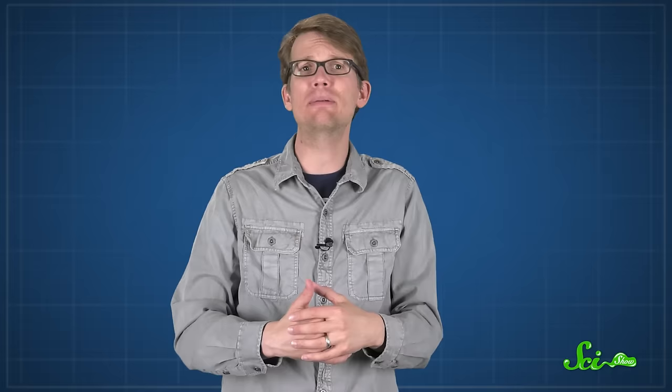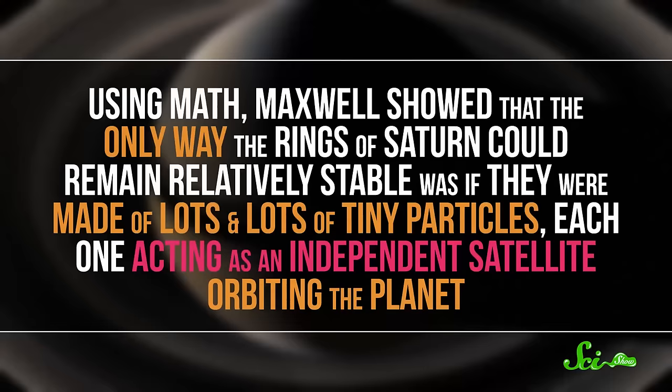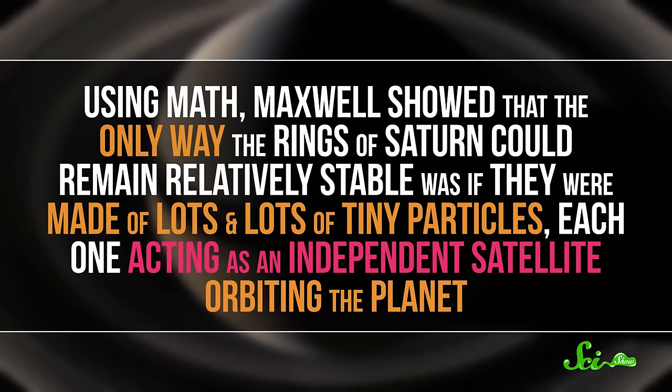Scientists thought they might have been solid, but if they were, then the rings should have been banging into each other, or even into the planet. And if they were a liquid, why wouldn't they break apart? Well, using math, Maxwell showed that the only way the rings of Saturn could remain relatively stable was if they were made of lots and lots of tiny particles, each one acting as an independent satellite orbiting the planet.